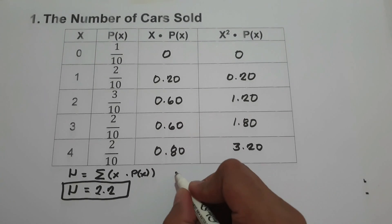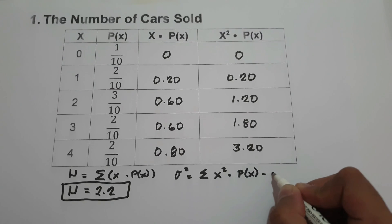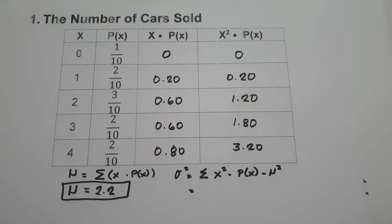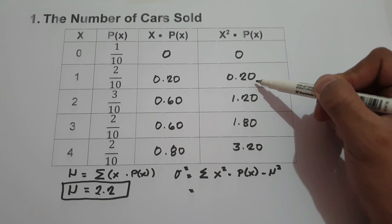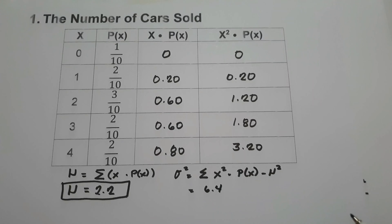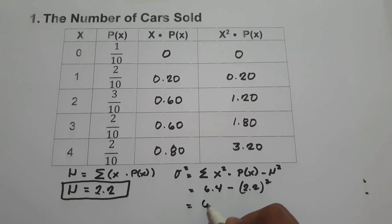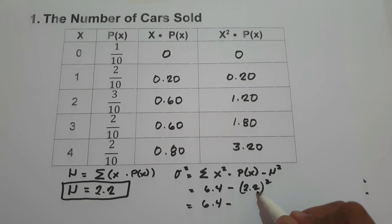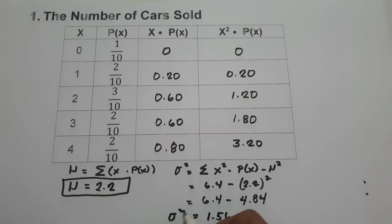To find the variance, we use the formula: summation of x squared times p(x) minus mean squared. Adding 0 plus 0.20 plus 1.20 plus 1.80 plus 3.20 gives us 6.4. Then we subtract the mean squared: 2.2 squared is 4.84. So 6.4 minus 4.84 equals 1.56. This is our variance.